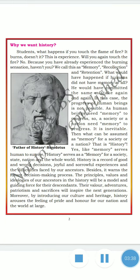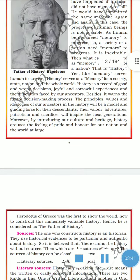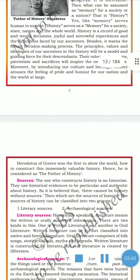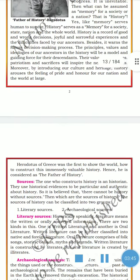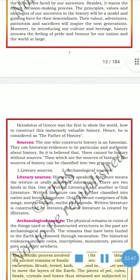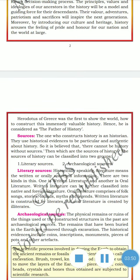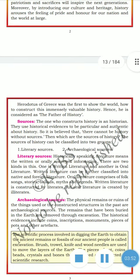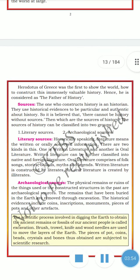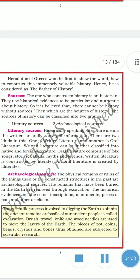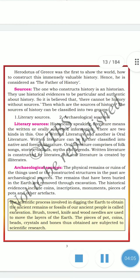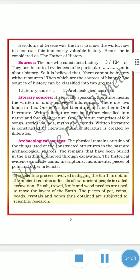When there is history, it comes from sources — we call them sources. One is literary sources and another is archaeological sources. In literary sources, history is conveyed through written or oral information. There are two kinds: one is written literature and another is oral literature.